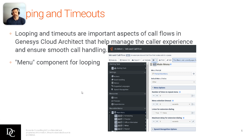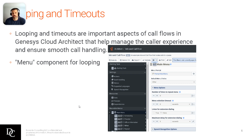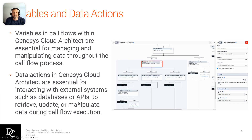Looping and timeouts are important — they help you manage caller experience and ensure smooth call handling. It's a menu component. You can see the looping here; you can set the number of times to repeat a menu. Looping can also happen within a reusable task at the starting task, and that will be explained — we'll actually have that demonstration in one of the hands-ons. For this module, the menu component is the component for looping.